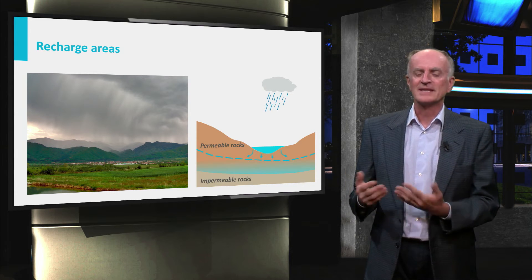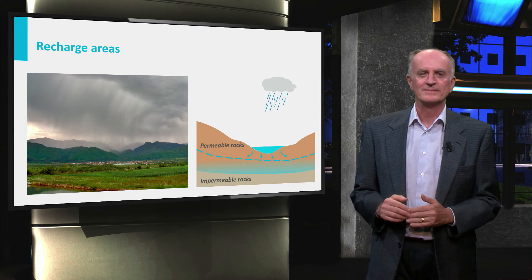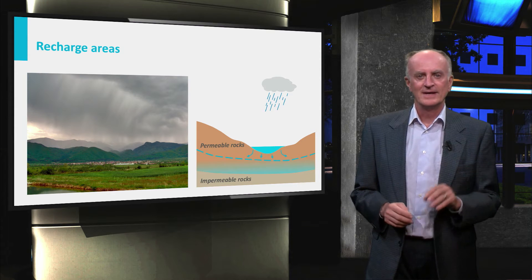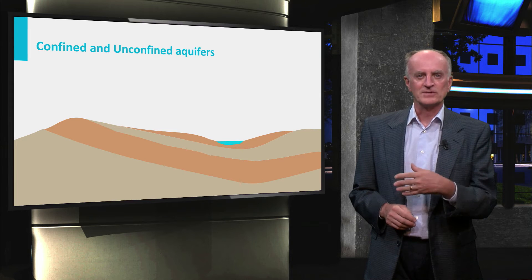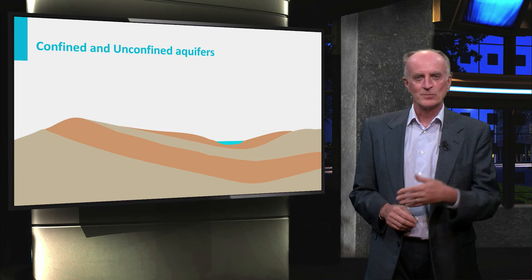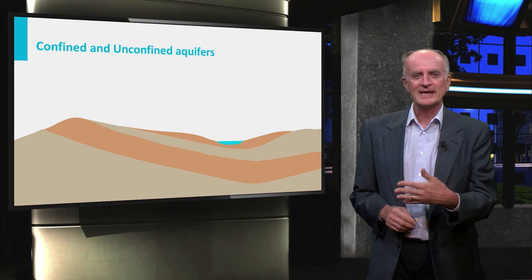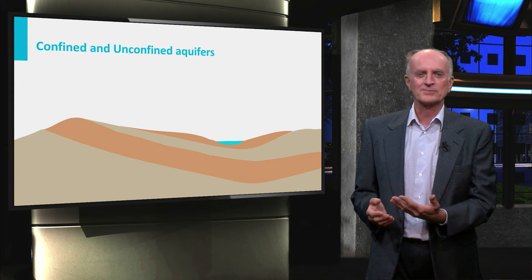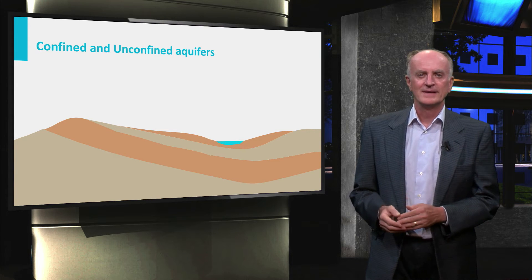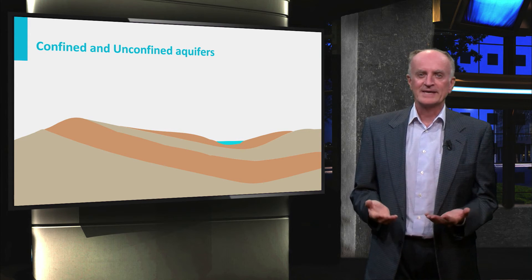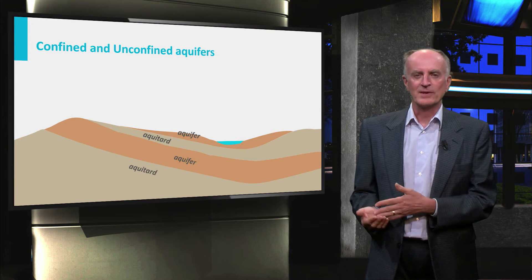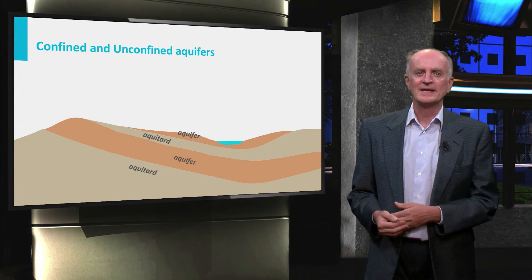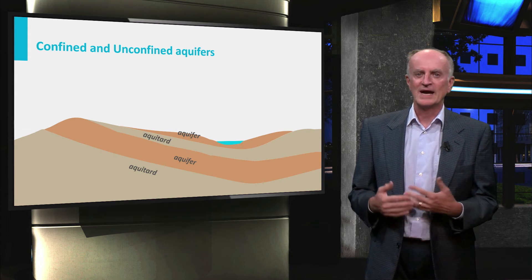The water infiltrating the underground in the recharge areas will enter high-permeability layers, partly or fully saturating them with water. These layers are called aquifers, and they contrast with low-permeability layers called aquitards.